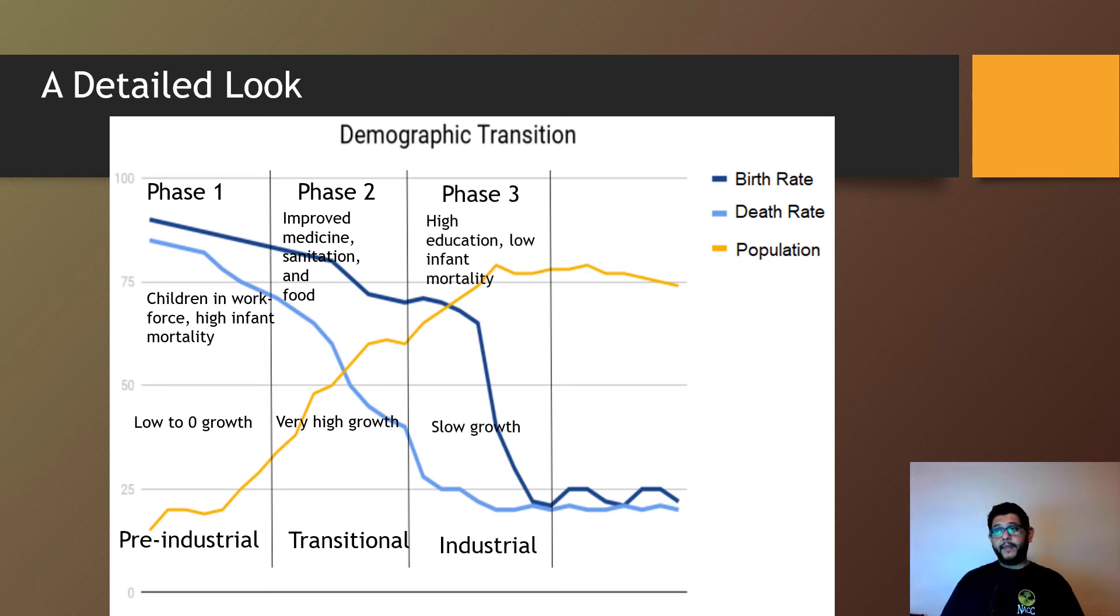When you get to stage three, that's where you have a very high education level, low infant mortality, and growth starts to slow down. This is called the full-on industrial phase.